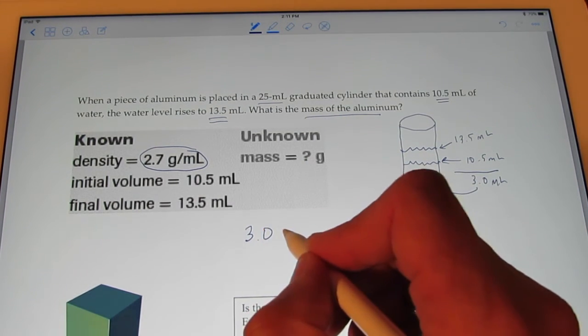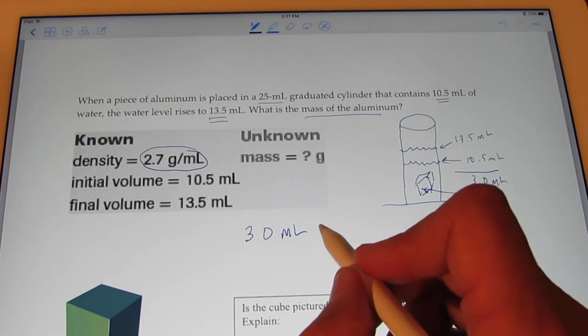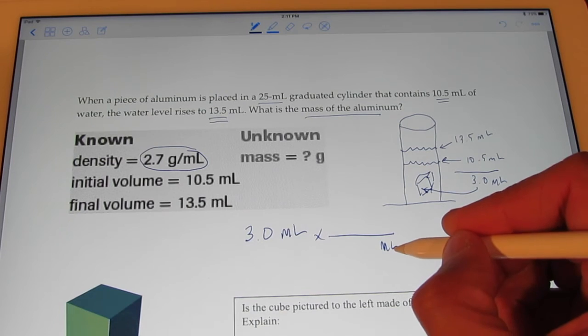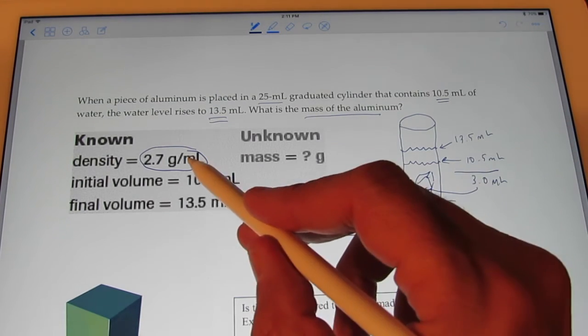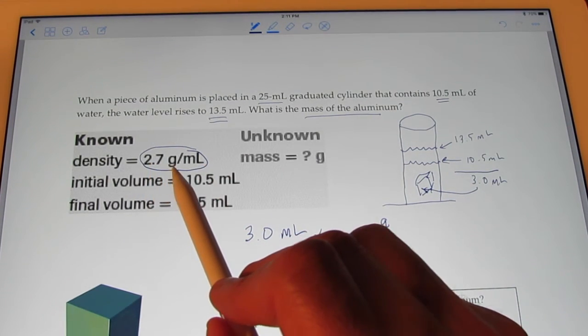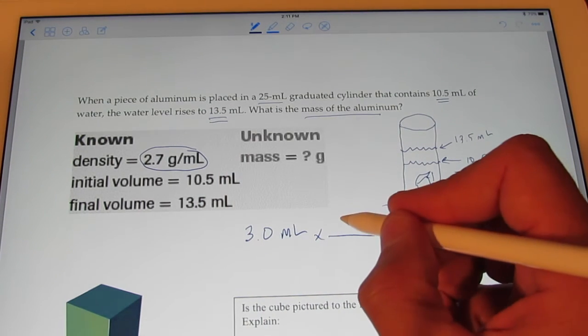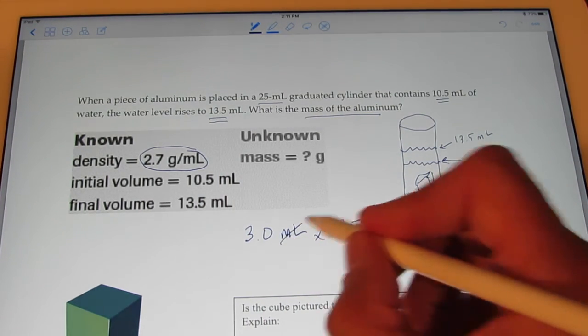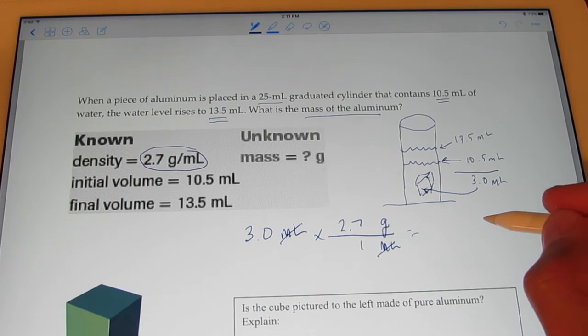3.0 milliliters. That's my volume. I want to hop out of milliliters. So, I put that on the bottom, kiddos, and get into grams. And I know my density is 2.7 grams per milliliter. 2.7 grams per milliliter. So, milliliters divide out. And I will have the mass of that piece of aluminum in grams.